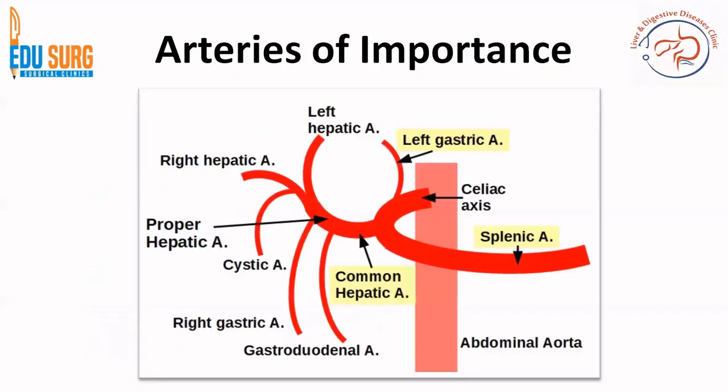This is a diagram that many of you would have seen. We are looking at the celiac axis that arises from the abdominal aorta. We have videos on the abdominal aorta and its branches, as well as a separate video on blood supply to the liver where this anatomy is also discussed. The celiac axis gives three major branches: the common hepatic artery, the splenic artery, and the left gastric artery.